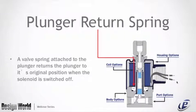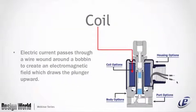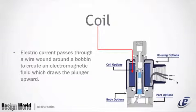A plunger return spring attached to the plunger returns the plunger to its original position when the solenoid is switched off. Electric current passes through a wire wound around a bobbin to create an electromagnetic field which draws the plunger upward. Some industry standards include non-molded, molded, high temperature, diode rectified, and potted coil housings.